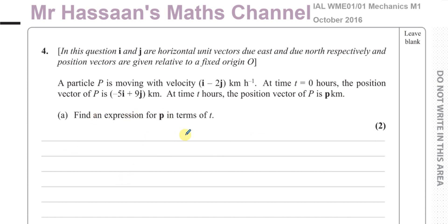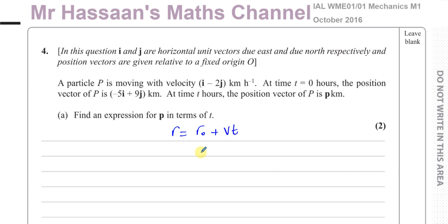We know that the position vector of an object going at a constant velocity is given by its initial position — that's when time was 0 — plus its velocity times time. That's the general formula to find the position vector of any particle at time t that's going at a constant velocity.